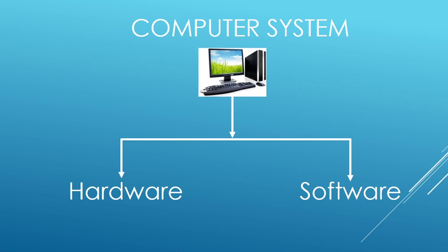Now, why do we call this a computer system? Because when all the parts are connected to each other with the help of a cable or wire, we call the entire system a computer system, and this is the hardware — the devices, including input, output, and storage devices.